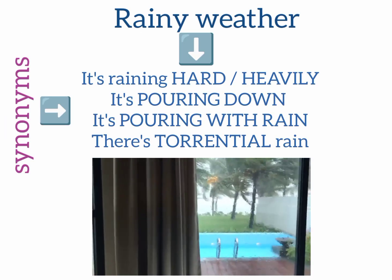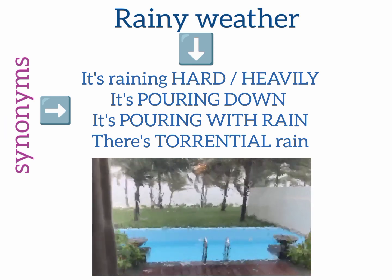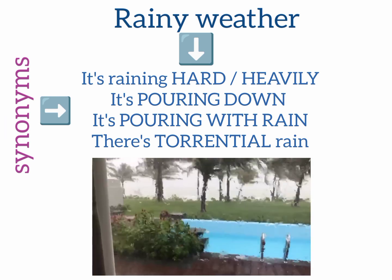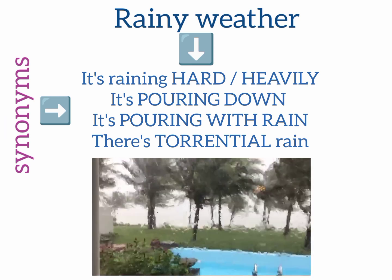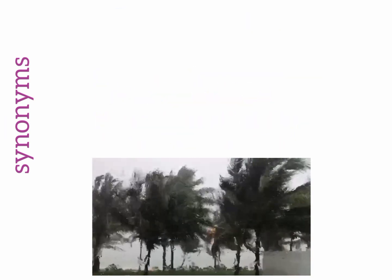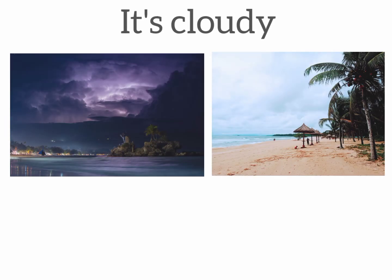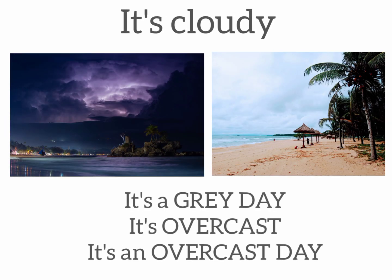Phrases to talk about rainy weather: it's raining hard or it's raining heavily; it's pouring down or it's pouring with rain; torrential rain. It's drizzling means it's raining lightly. Instead of saying it's cloudy, you can say it's a gray day, it's overcast, or it's an overcast day.